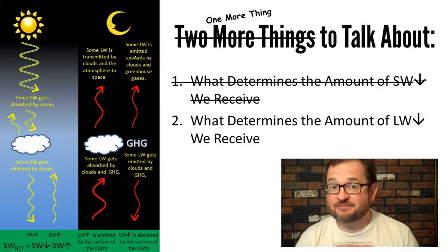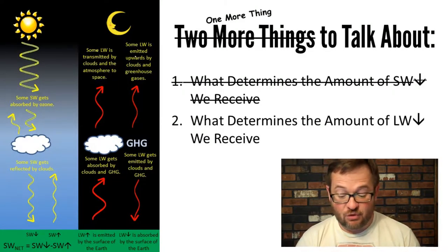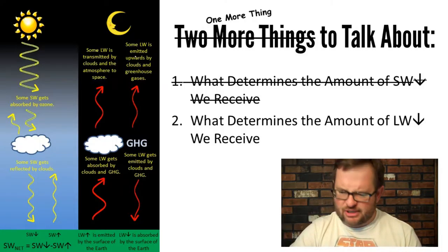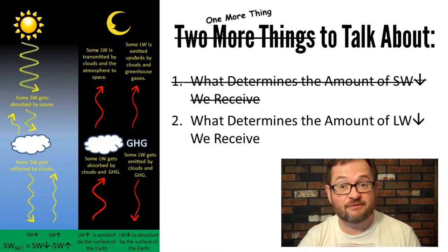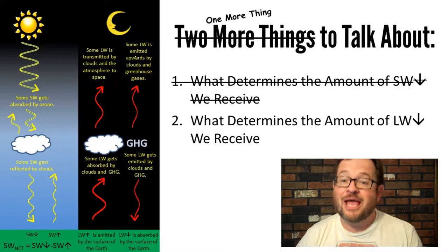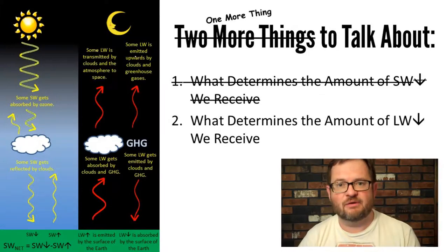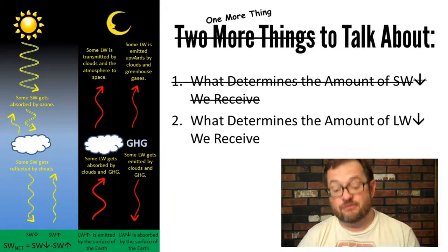Welcome back. This is the last part of these rather long lectures about heat, and this brings us to the end of the first module of the course. This second lecture on heat was really about just two things: how much shortwave radiation is received at Earth's surface, and how much longwave radiation we receive coming down from the sky.